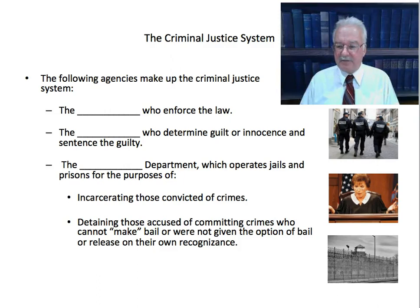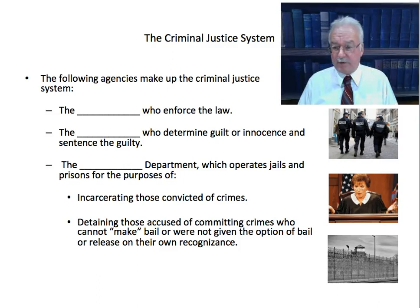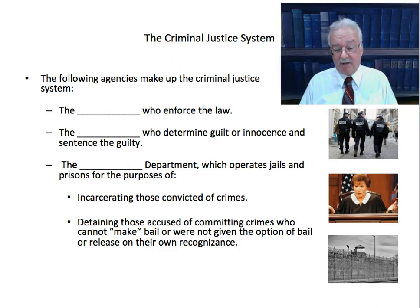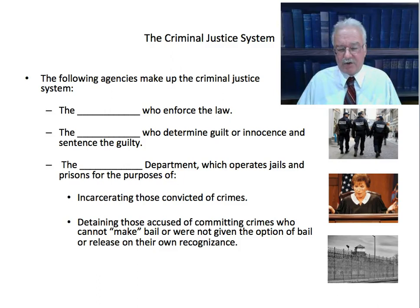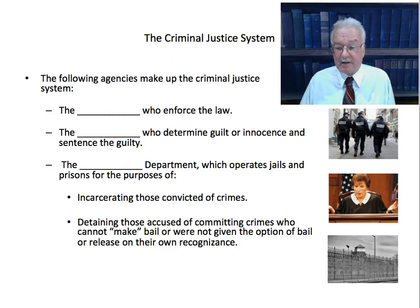If you've been convicted of a crime and incarceration is in order, you go to the corrections department. You go to a jail if your sentence is a year or less; you go to a prison if it's over a year. The corrections department also detains those accused of crimes who cannot make bail or were not given the option of bail or release on their own recognizance. If you've been accused of a crime, you usually have an initial hearing before a judge who decides where you'll be while the case is adjudicated. Some people are released on their own recognizance — those who did not commit serious crimes and have a history of showing up for court appearances.